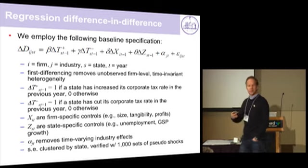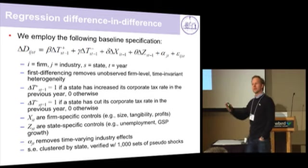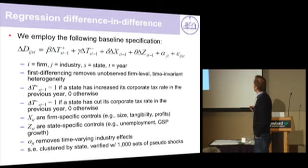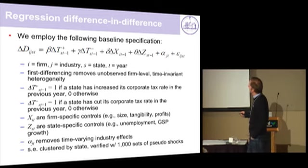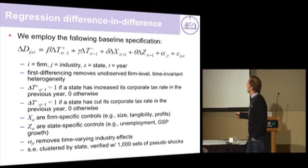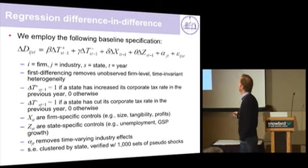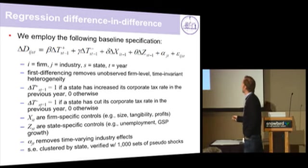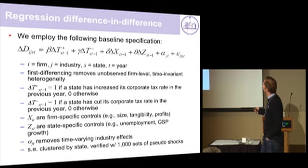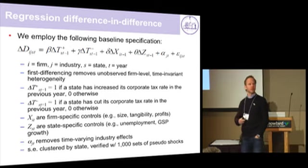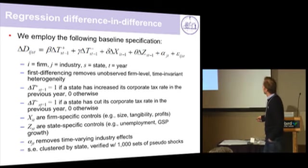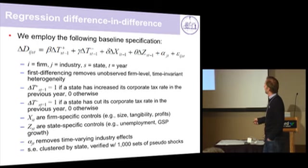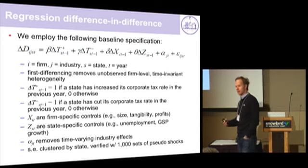Then you do it rigorously in a regression context. The basic idea is what I've shown you in the North Carolina-South Carolina exercise, just allowing it to do with controls. We have a firm i in industry j, in state s at time t. We look at the change of that firm's debt. On the right-hand side, we have a dummy that goes to 1 if the state has increased its taxes in the previous year, and a dummy that goes to 1 if the state has decreased its taxes in the previous year. We include firm-level controls, state-level controls, and allow the time effect to vary for each industry. Standard errors are clustered by state.